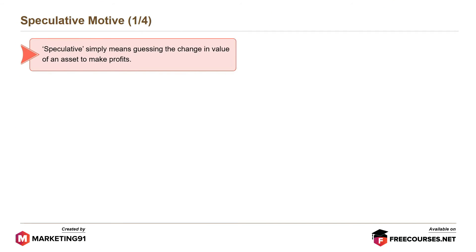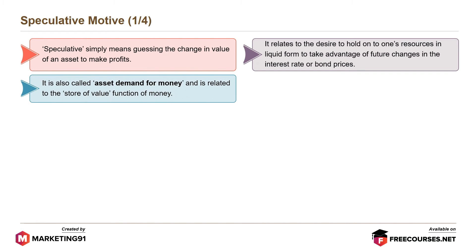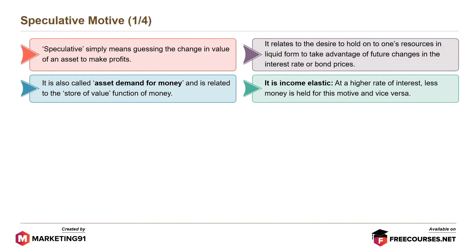The last motive is speculative motive. Speculative simply means guessing the change in value of assets to make profits. It relates to the desire to hold on to one's resources in liquid form to take advantage of future changes in the interest rate or bond prices. It is called asset demand for money and is related to the store of value function of money. It is income elastic. At a higher rate of interest, less money is held for this motive, and vice versa.